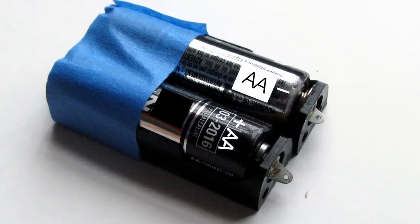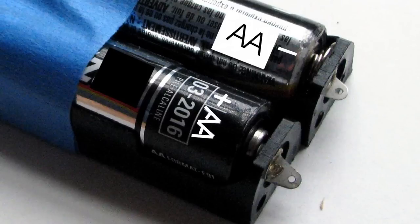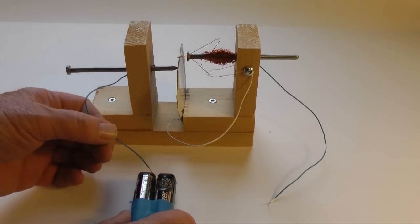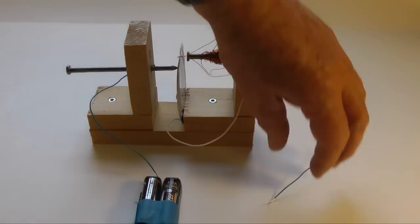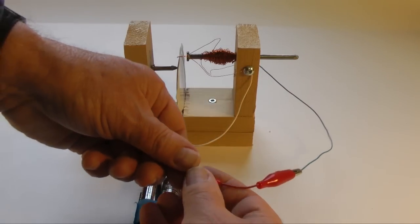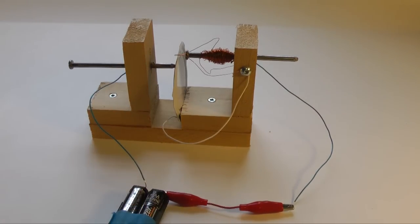Power to the electromagnet is provided by two 1.5 volt AA batteries, connected in series. One lead from the battery pack connects to the wire connected to the nail. The other lead from the battery pack connects to the second lead on the electromagnet. I used a jumper cable to complete this connection. It creates a simple switch.